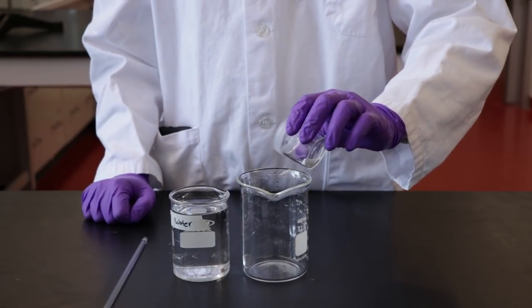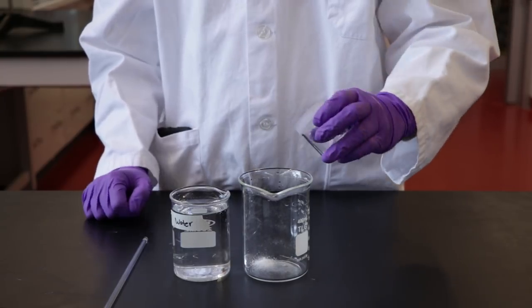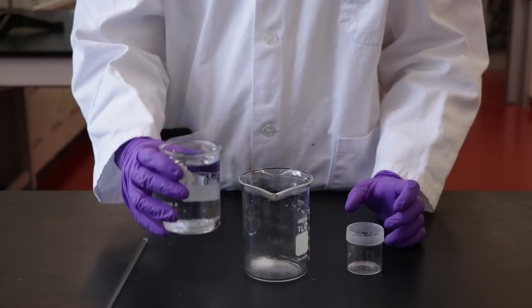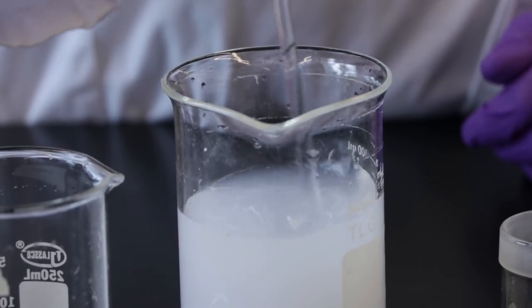Add the one gram of unknown mixture to a 400 milliliter beaker. Then add 200 milliliters of water. Stir the solution for one minute.